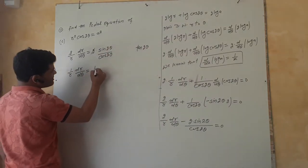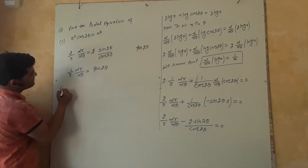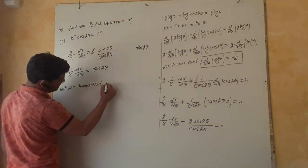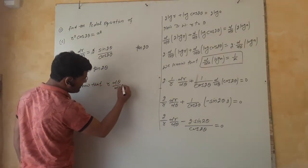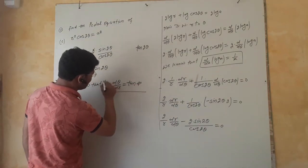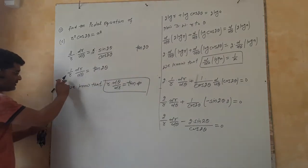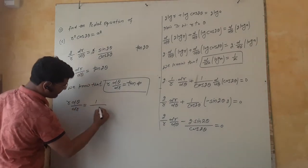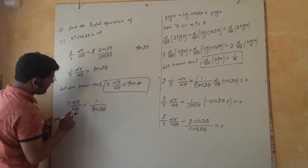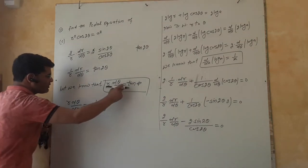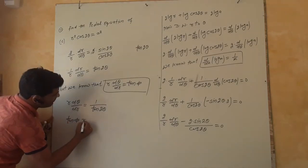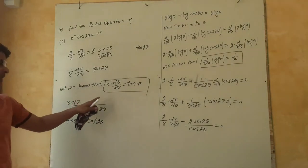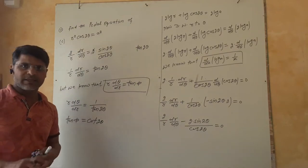So 1/R · dR/dθ = tan 2θ, which means r · dθ/dR = 1/tan 2θ = cot 2θ. Therefore tan φ is equal to cot 2θ, because 1/tan θ = cot θ and 1/cot θ = tan θ.